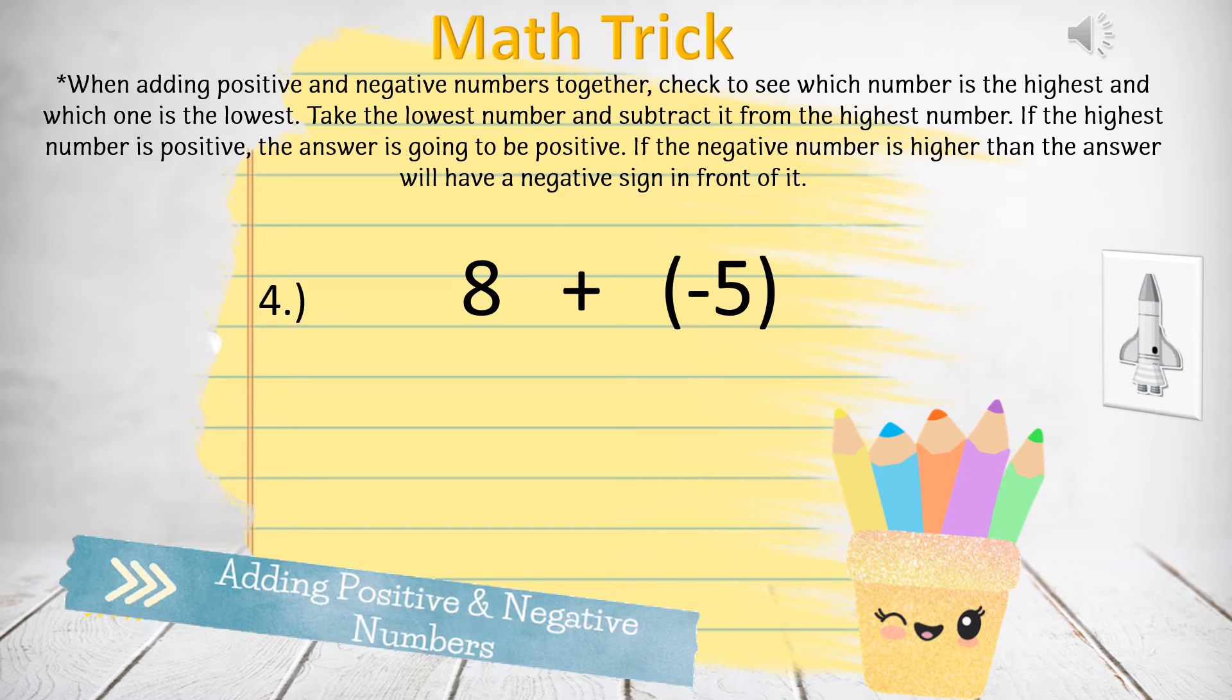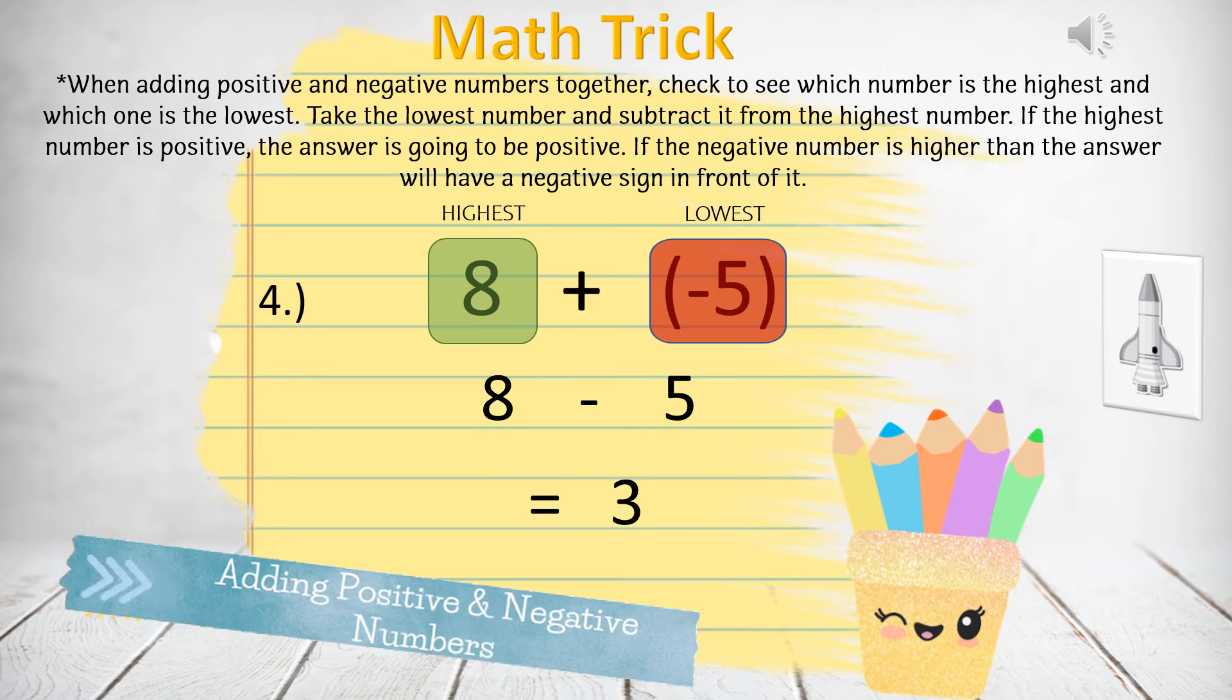Question 4: 8 plus negative 5. The highest number is 8, the lowest number is 5. 8 minus 5 equals 3. And since the highest number is positive, the answer is positive. Positive 3.